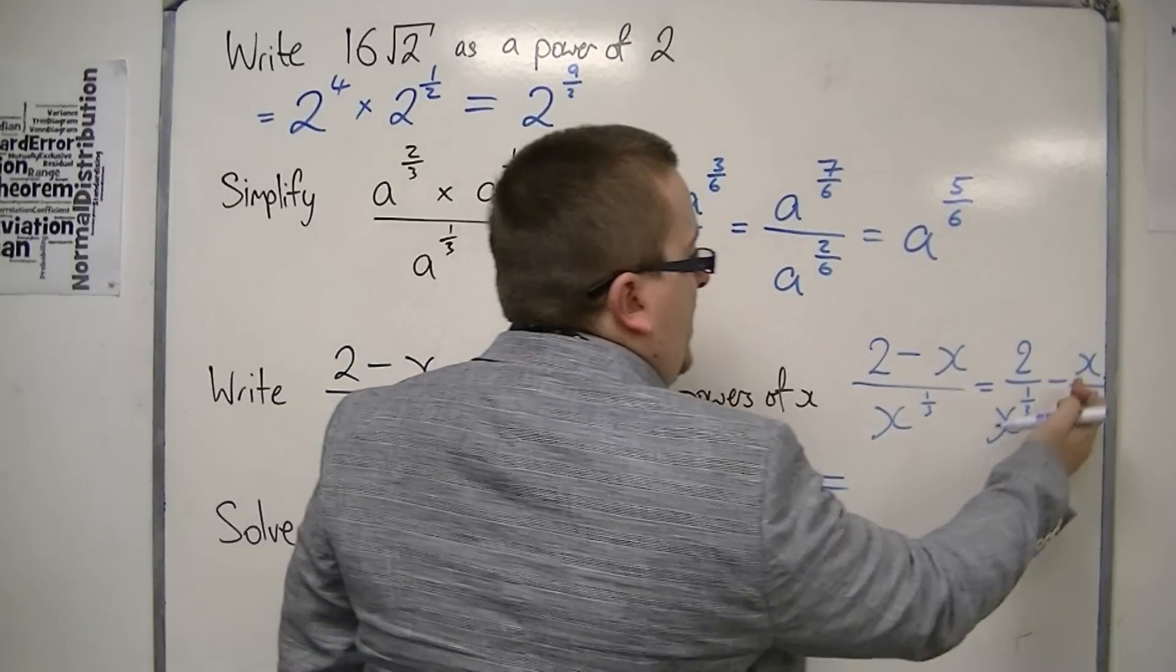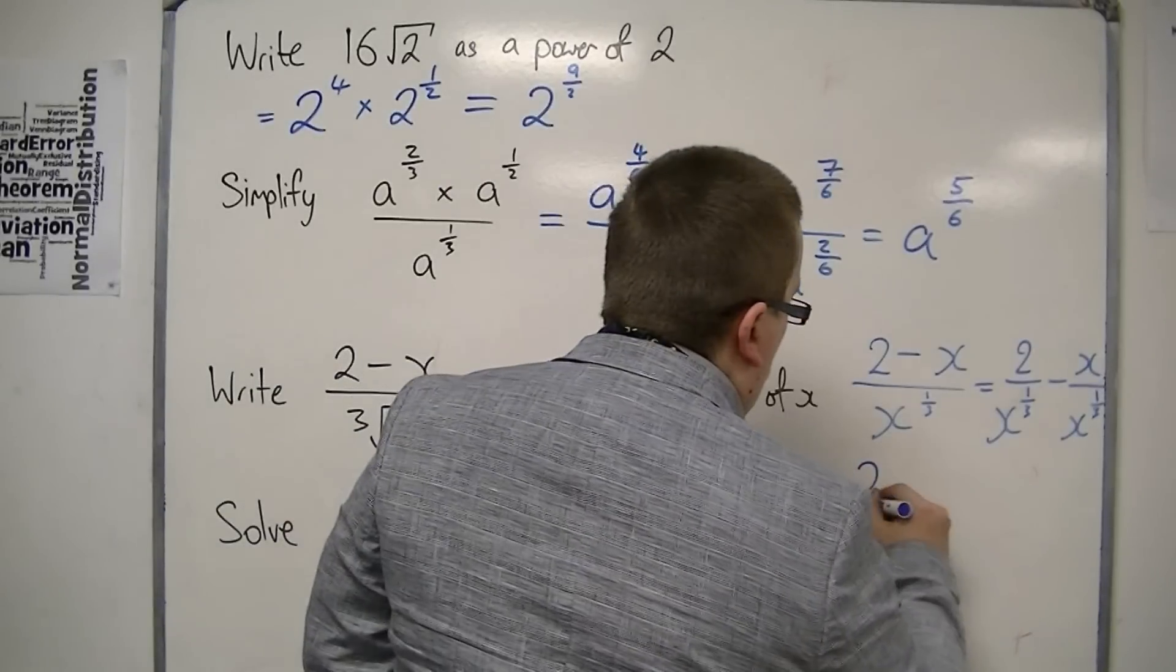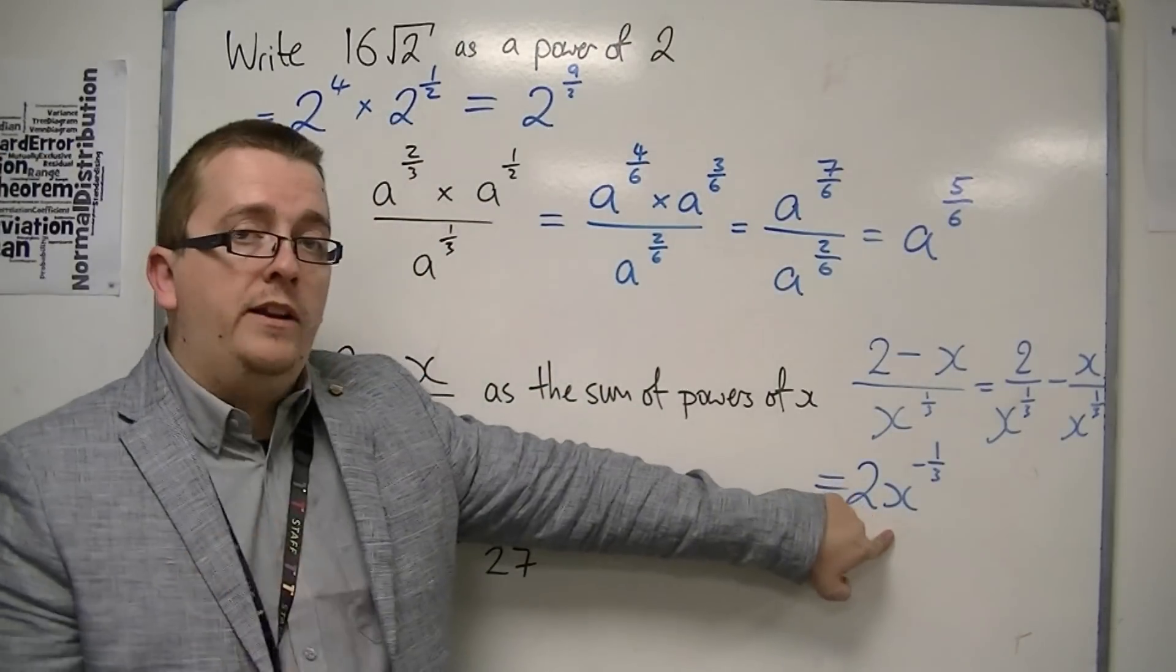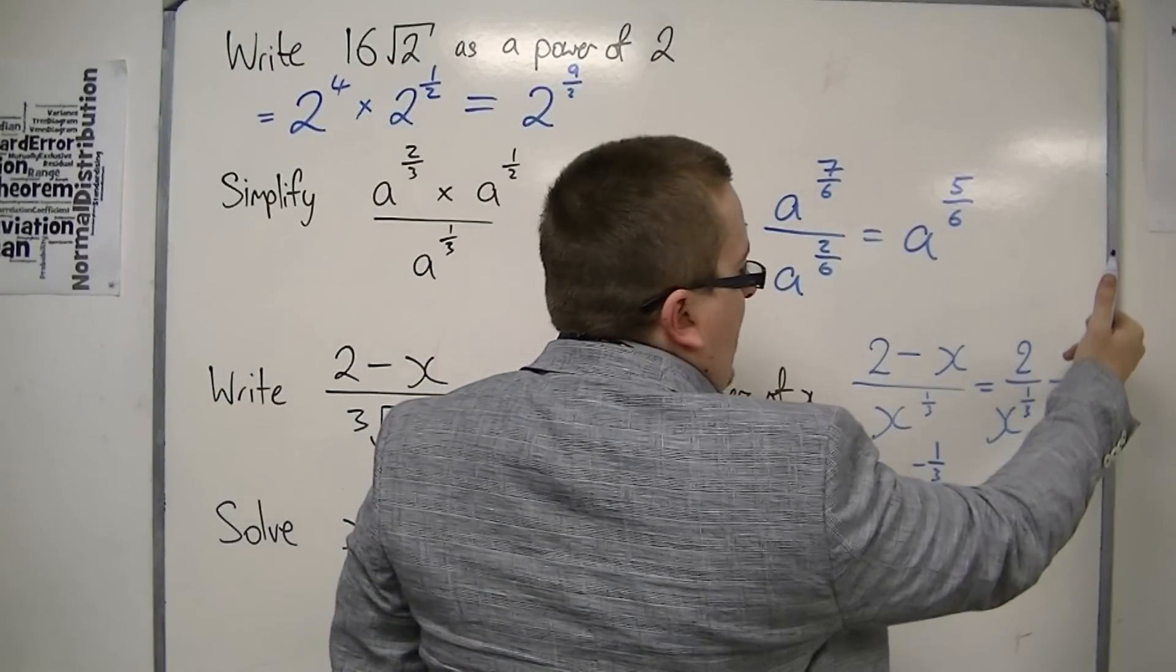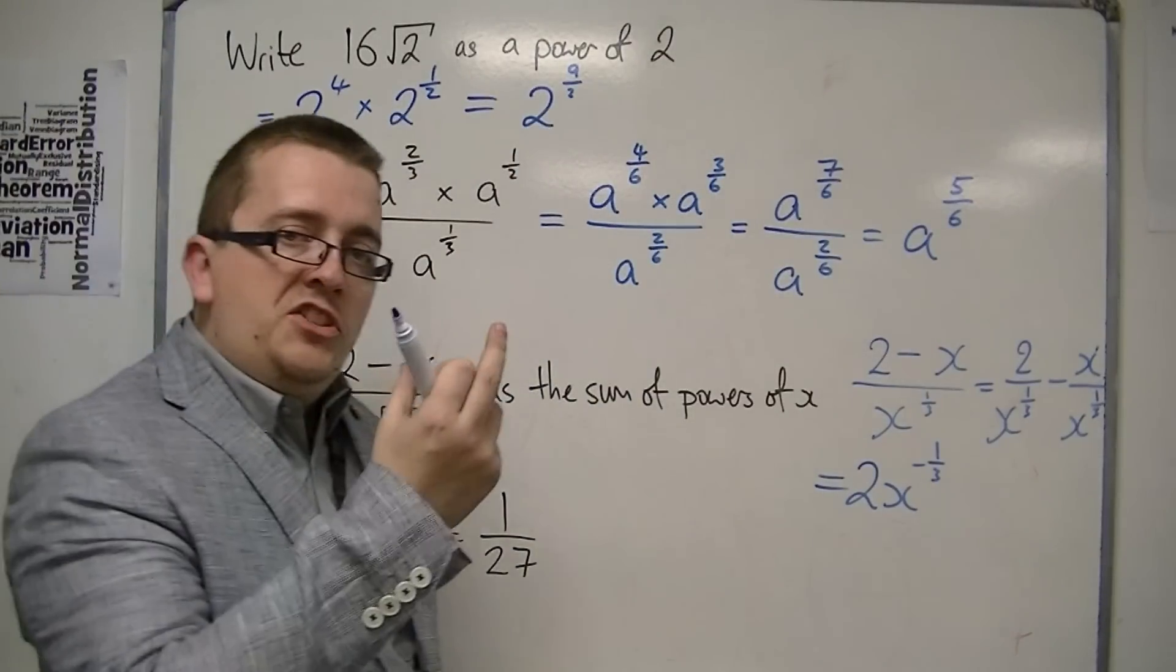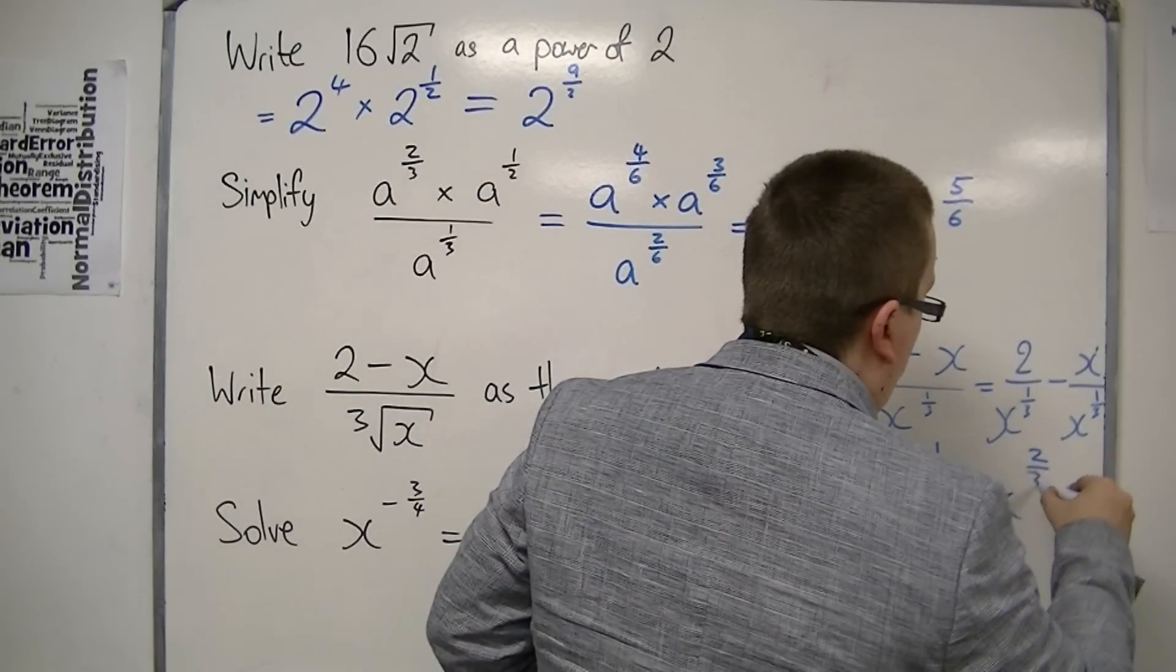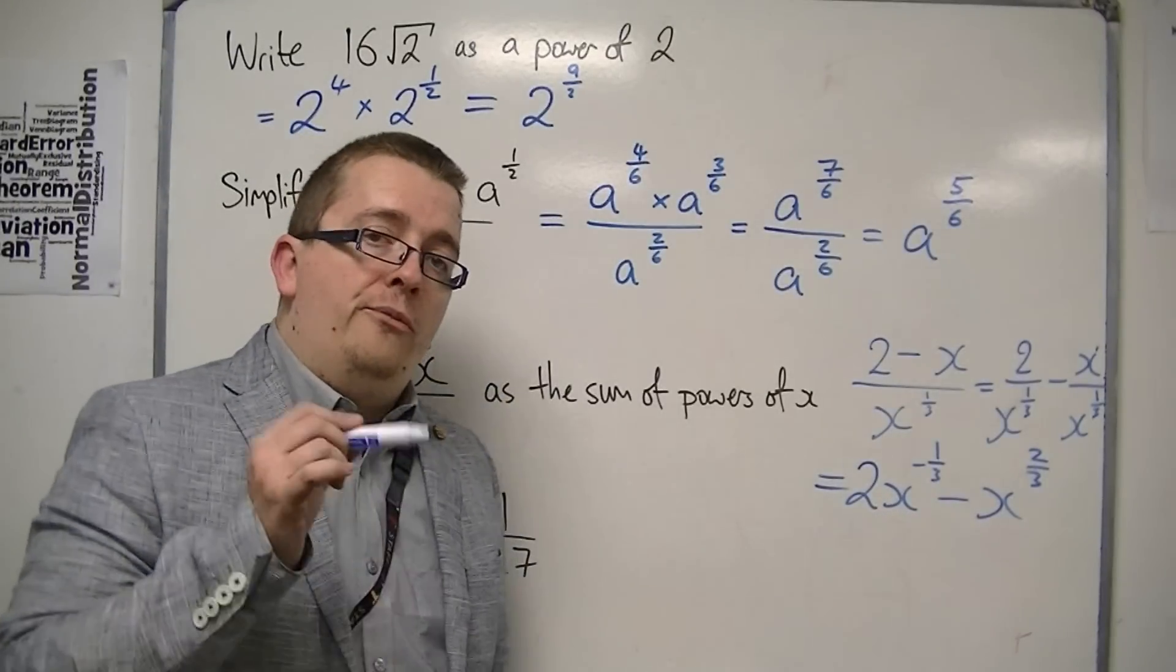We've got 2 over x to the 1/3 take away x over x to the 1/3. Now, the first term there is 2x to the minus 1/3. This is two lots of 1 over x to the 1/3. The second term is x to the 1 divided by x to the 1/3. So, the indices subtract. You've got 1 take away 1/3 is 2/3. So, this is take away x to the 2/3. And it is now a sum of powers of x.